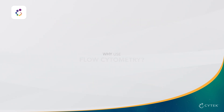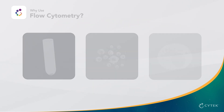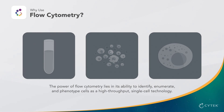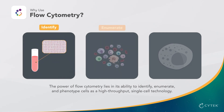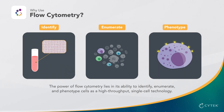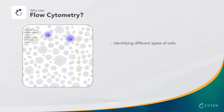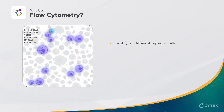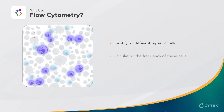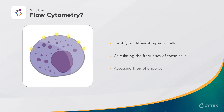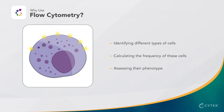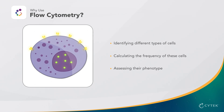Why use flow cytometry? The power of flow cytometry lies in its ability to identify, enumerate, and phenotype cells as a high-throughput single-cell technology. For example, identifying different types of cells within complex samples, such as distinguishing immune cells from other cells, calculating the frequency of these cell populations within the entire sample, and assessing their phenotype, such as quantifying expression of surface markers or detecting specific transcription factors within the cell.